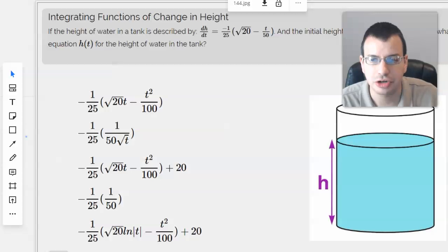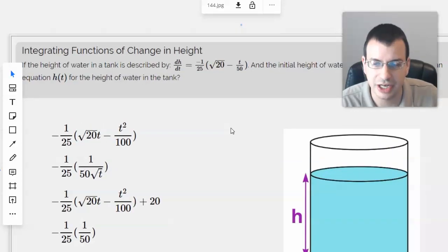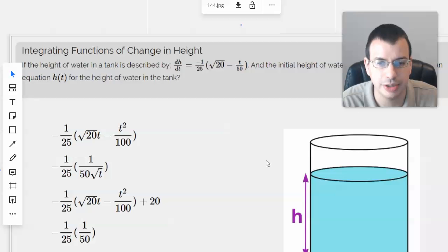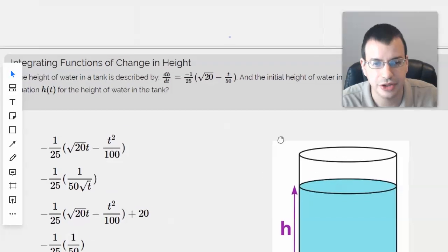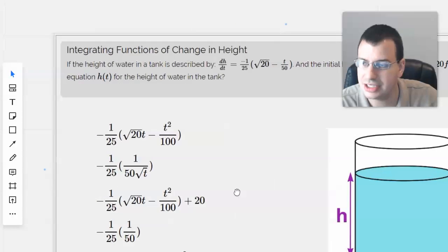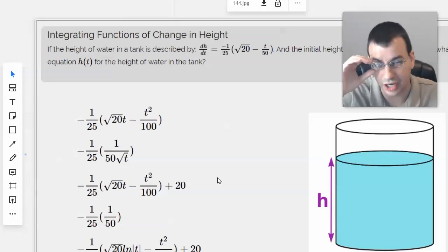The height of water in a tank is described by dH/dt equals negative 1 over 25 times quantity square root of 20 minus t over 50. The initial height of water in the tank is 20 feet. What is an equation H(t) for the height of water in the tank?